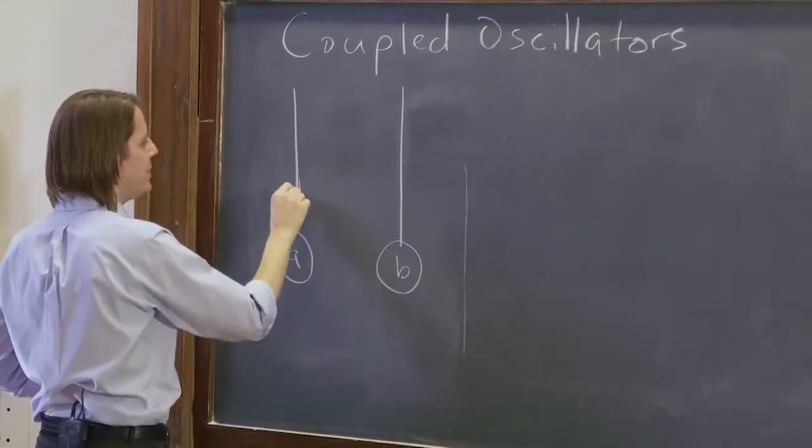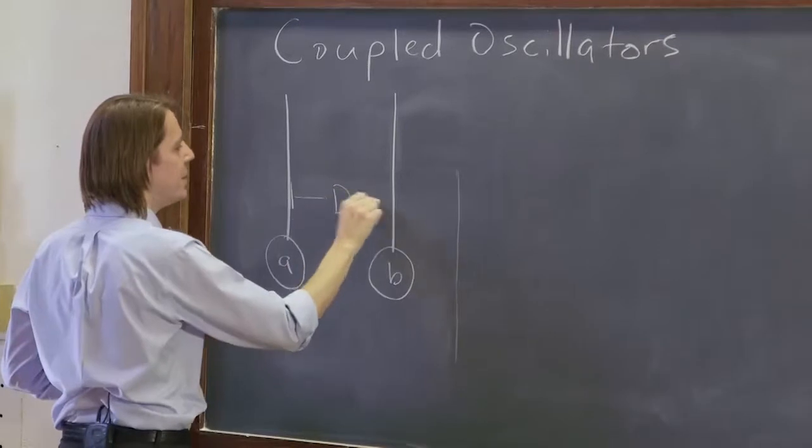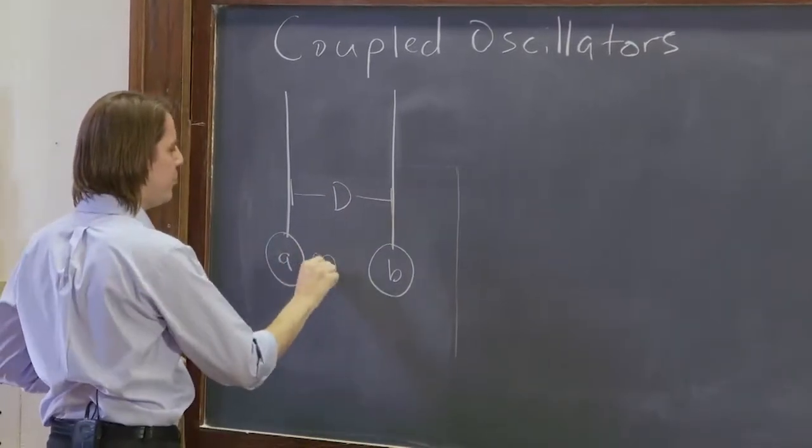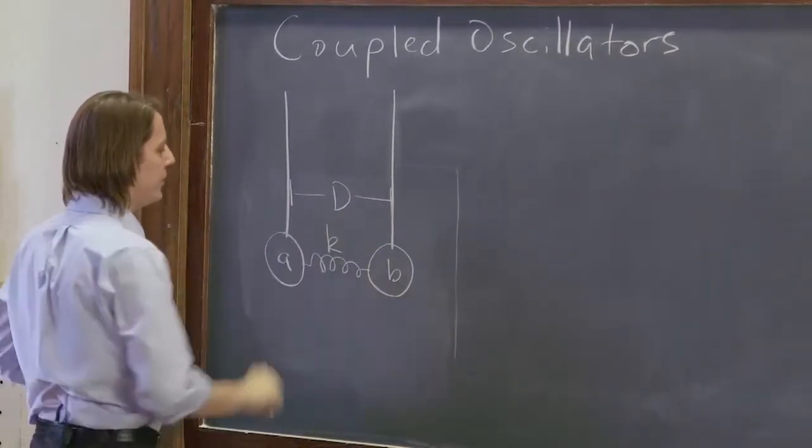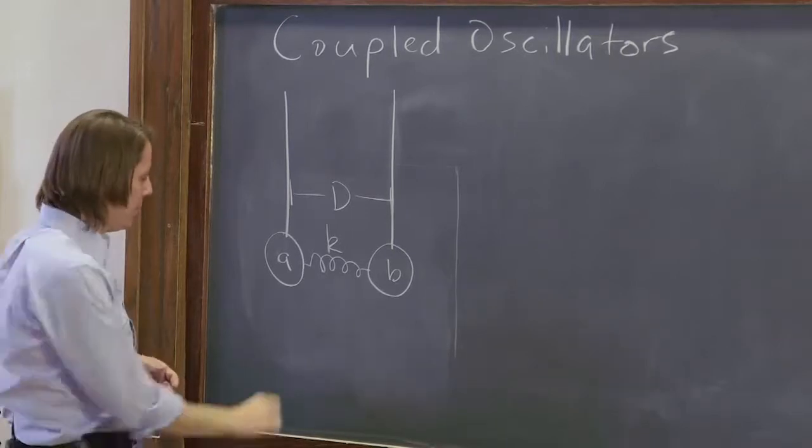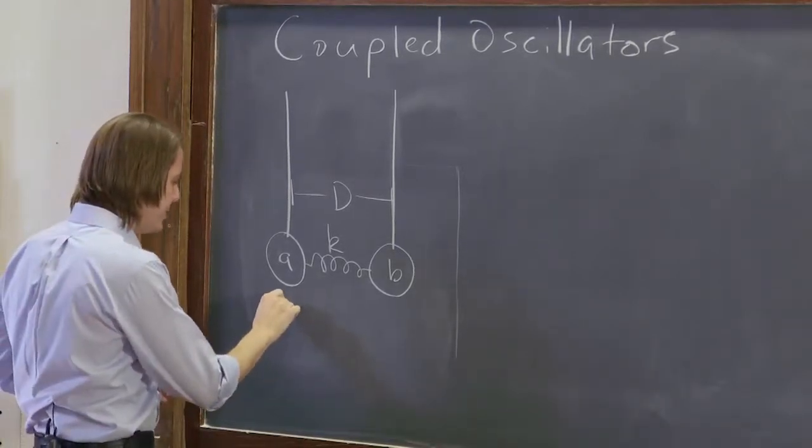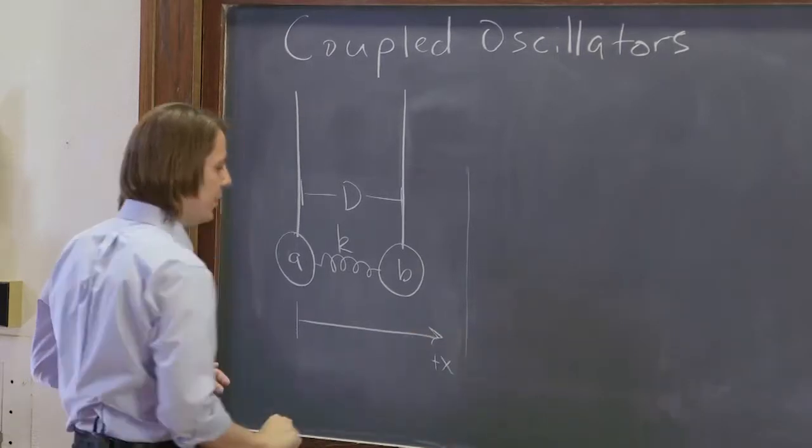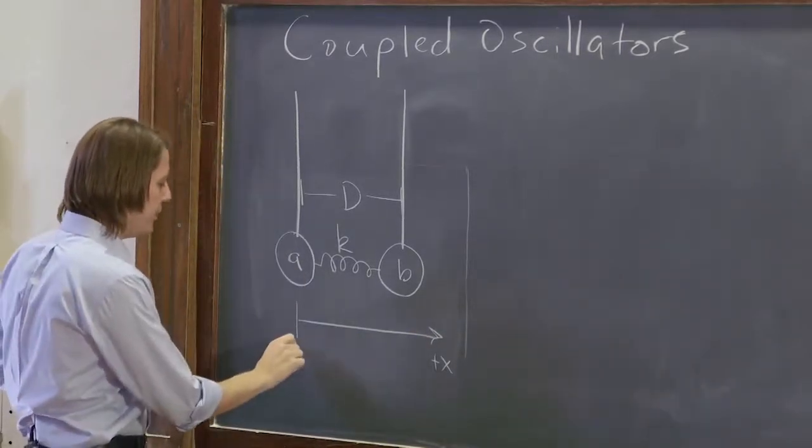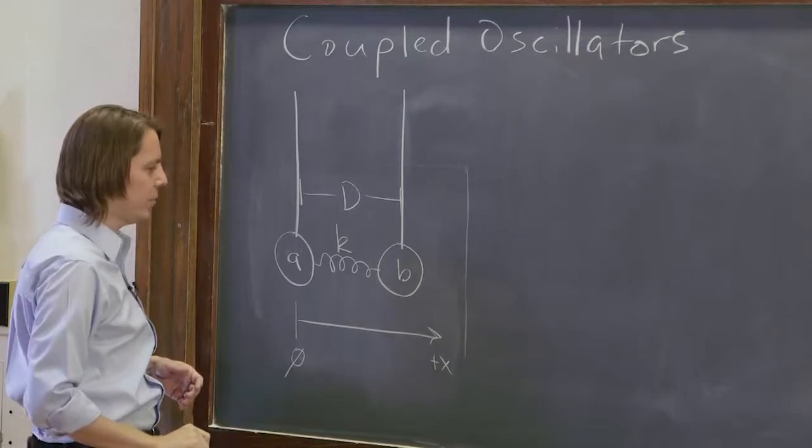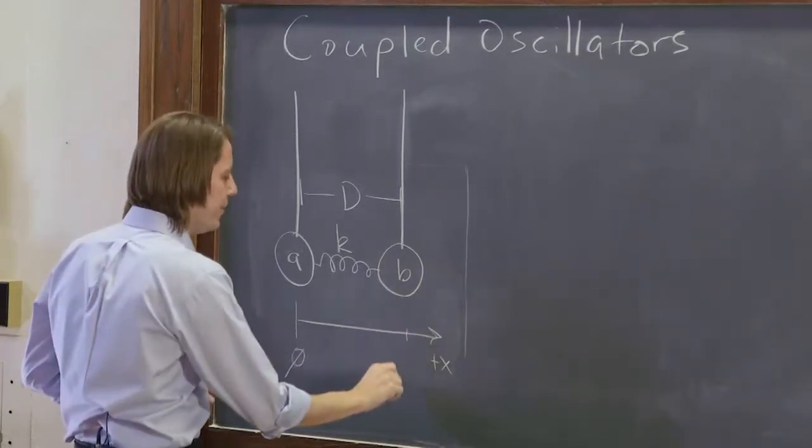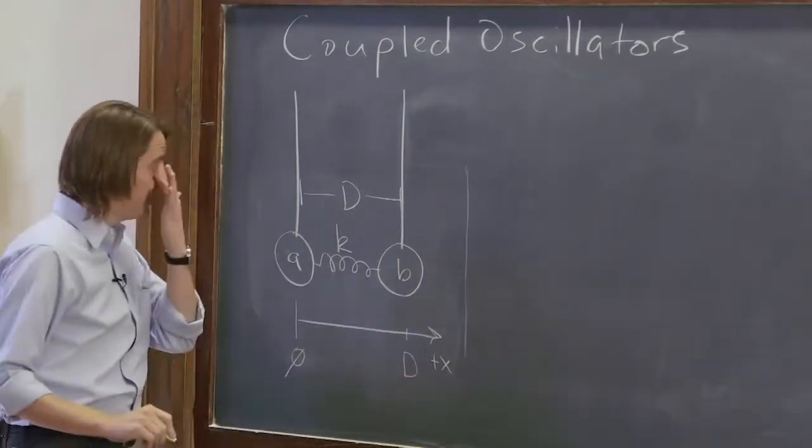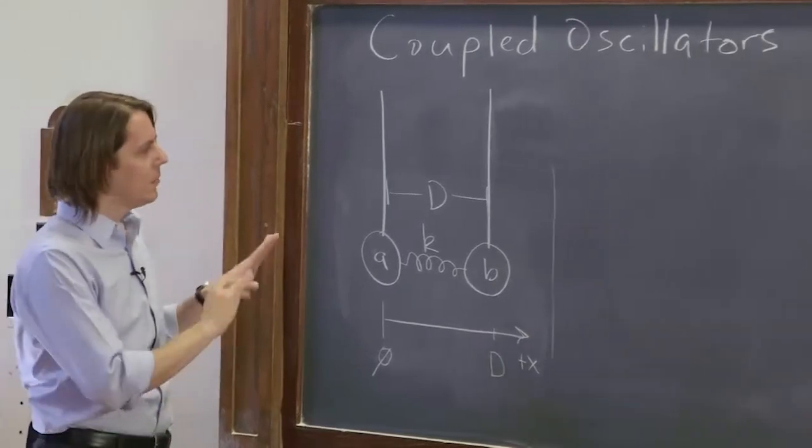They're separated by a distance that we'll call big D. And we've added a spring with spring constant K. Now let's see. So what we want to do is have an axis. Let's put them on the x-axis. And we'll say A is resting at the origin, at x equals 0. And B would therefore be resting at position x equals D. That's how we could set it up.